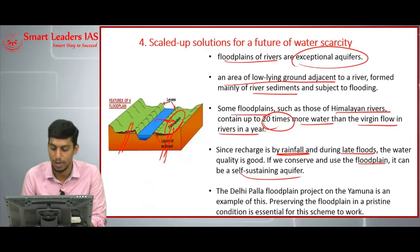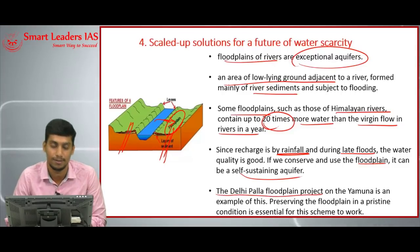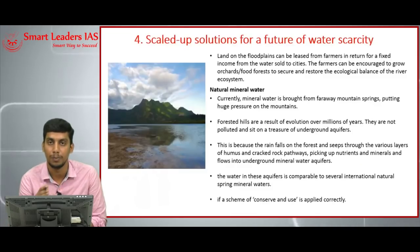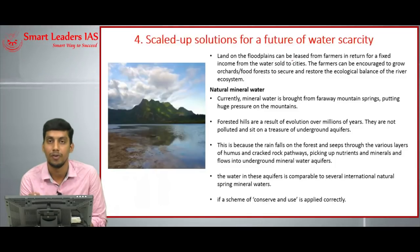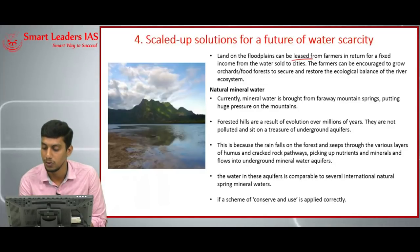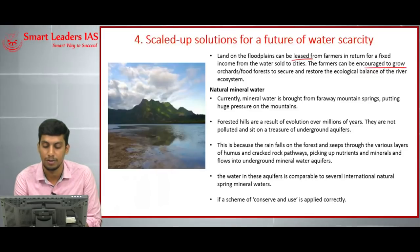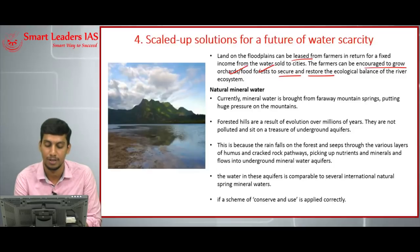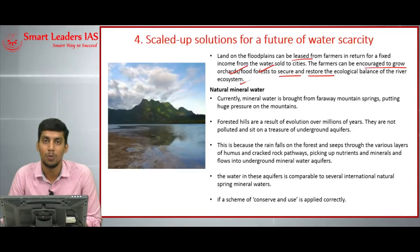This article gives one example: the Delhi Pala floodplain project. Land on the floodplains belonging to farmers can be taken on lease; from that land, water can be extracted and used for cities. The government can provide profitable income to the farmers, and farmers can also be encouraged to grow food forests to secure and restore ecological balance and the river ecosystem.